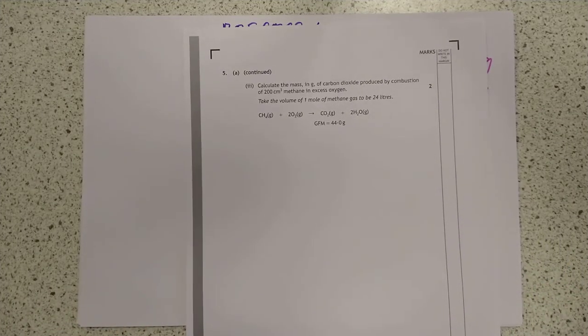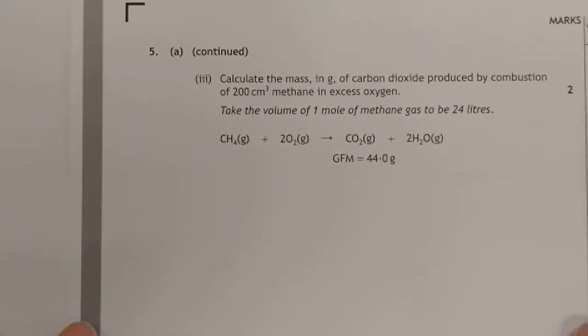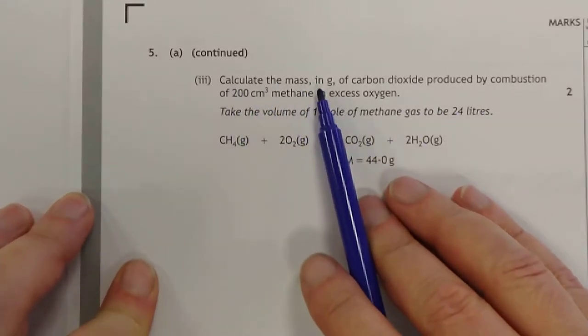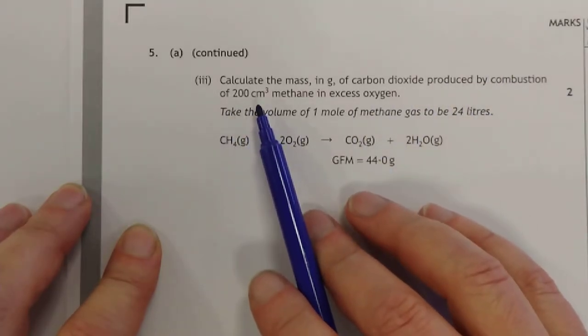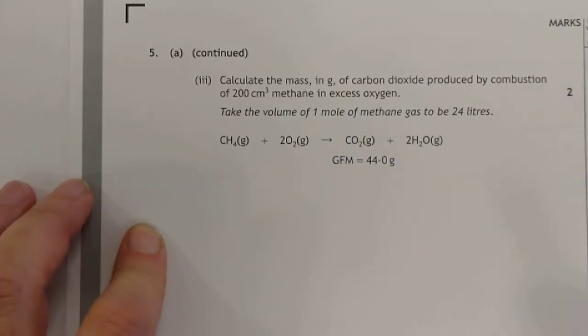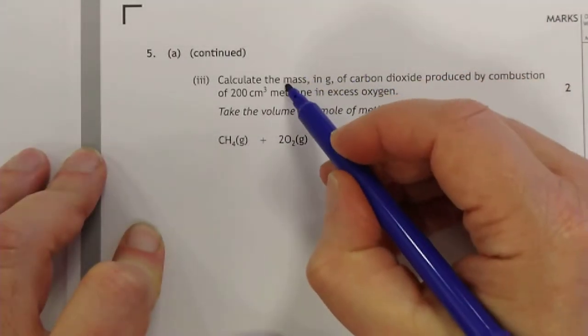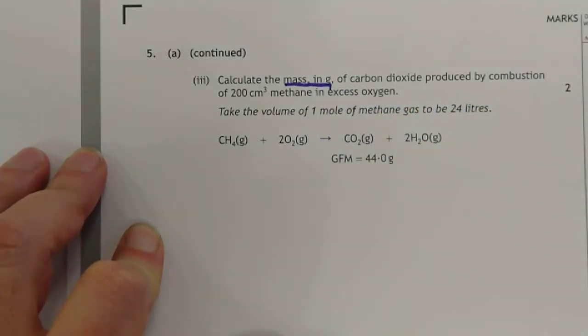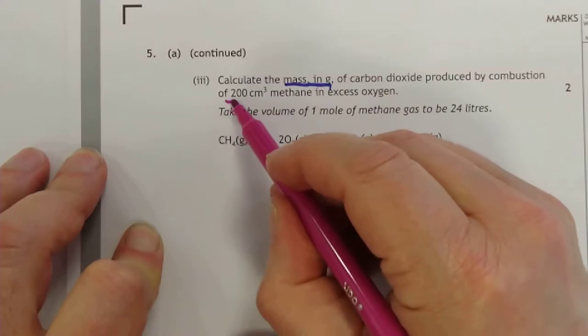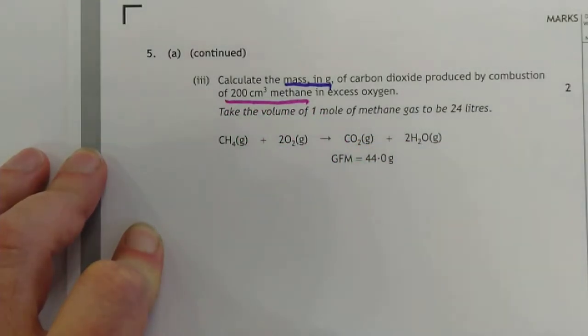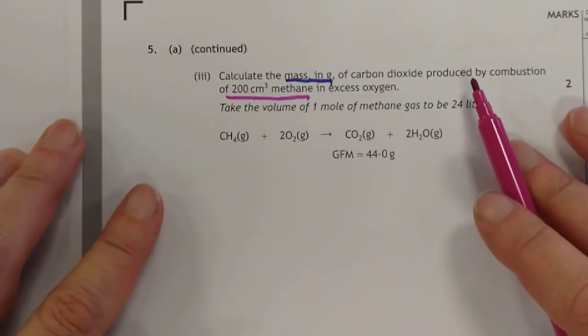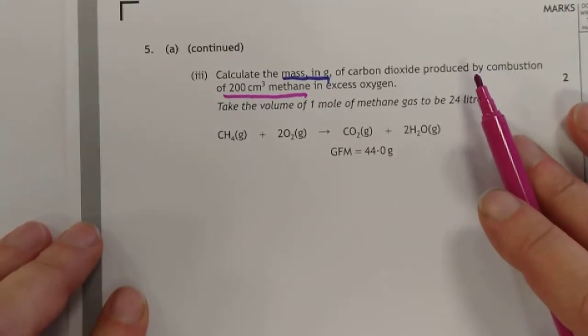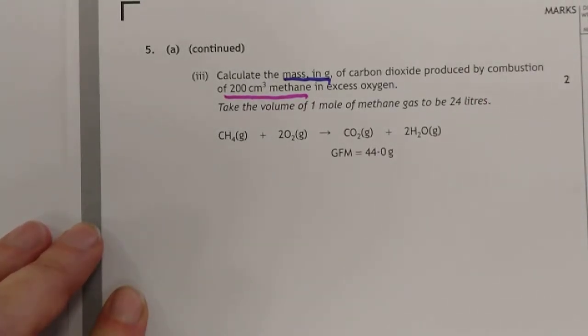Let me zoom in a wee touch on this. This is an exam question. It says calculate the mass in grams of carbon dioxide produced by the combustion of 200 centimetres cubed of methane and excess oxygen. At first, this might not look like a gas volume question because they're actually asking for a mass. But look at the type of data you've been given. That is a volume. They don't seem to be compatible at first, so you have a choice on how to go about this. I'll do it proportionately first, and then I'll shift everything into moles.